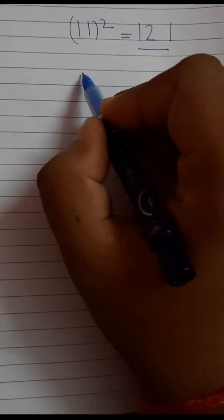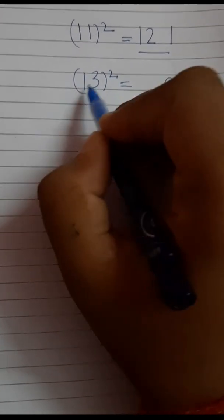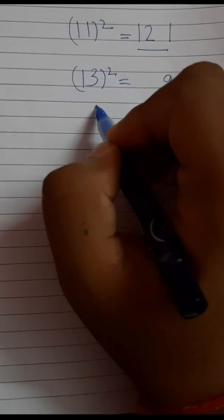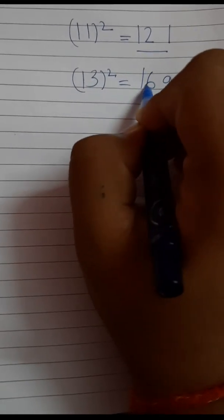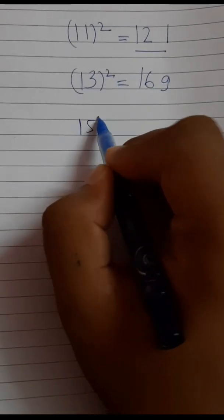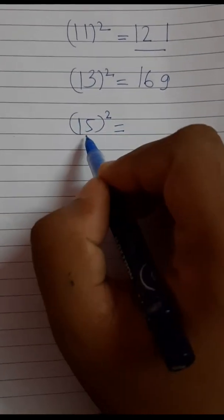Let's say we have to find the square of 13. We square the unit digit, then add the unit digit to the number itself. That is 13 plus 3, which makes 16. So 169 is the square of 13. Similarly for 15, we find the square of the unit digit.